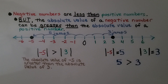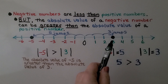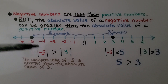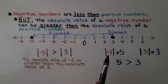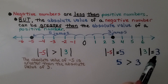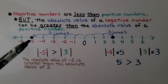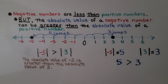Negative numbers are less than positive numbers because they go farther to the left on the number line. But the absolute value of a negative number can be greater than the absolute value of a positive number. For example, the absolute value of negative 5 is 5, and the absolute value of positive 3 is 3 — so the absolute value of negative 5 is greater than the absolute value of positive 3, even though negative 5 is less than positive 3. We'll talk about this more in the next lesson.